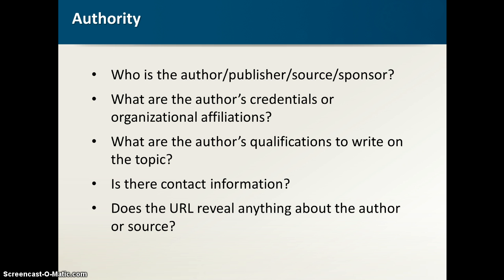Whereas if it says Dr. Joe Schmoe is a pediatrician in the Baltimore area and his Maryland state medical license is number 12345, it could still be a lie, but the odds have gone down because now this is something I can check on. I can be a little more confident that this is a real person who actually knows what they're talking about. Sometimes one way to find more information is by looking at the URL of the website, because that might tell us who the sponsoring organization is — a couple of ways to evaluate the authority of the author.